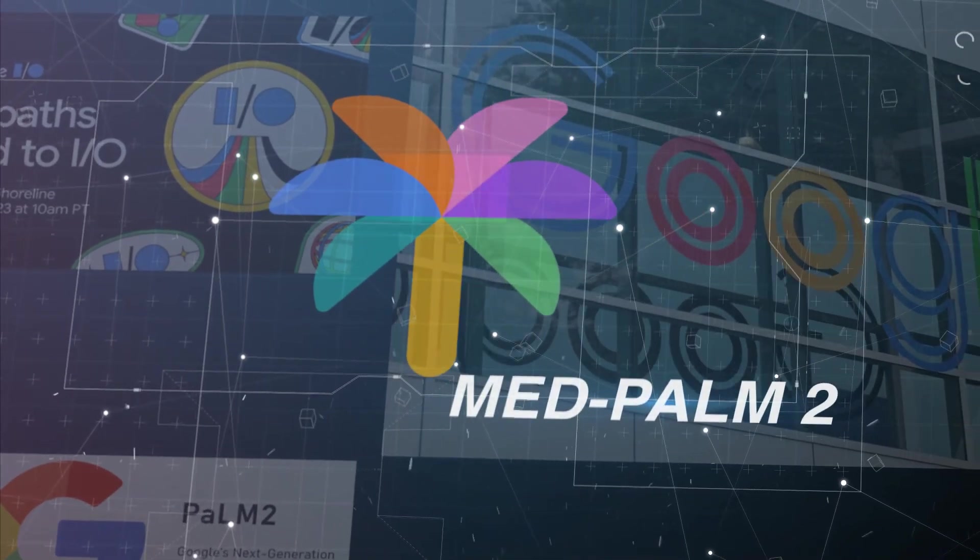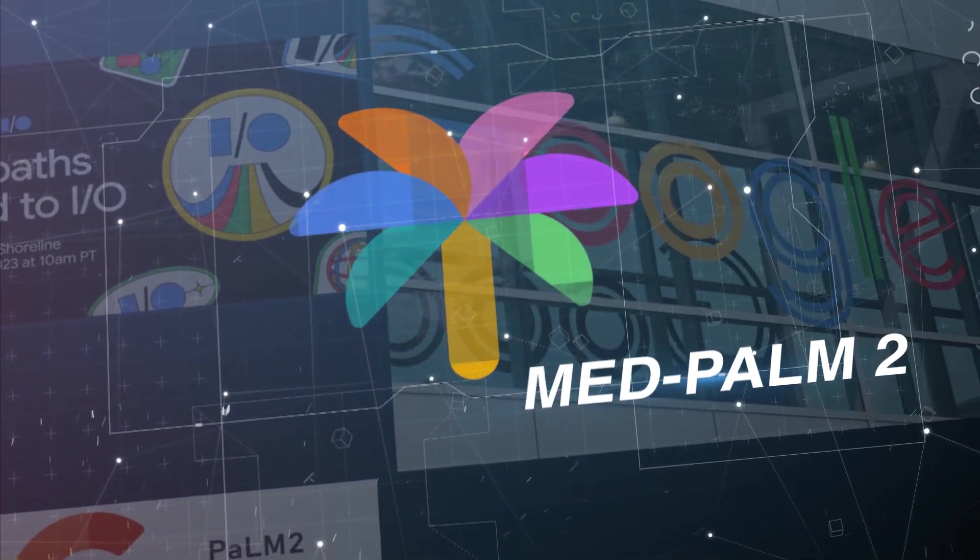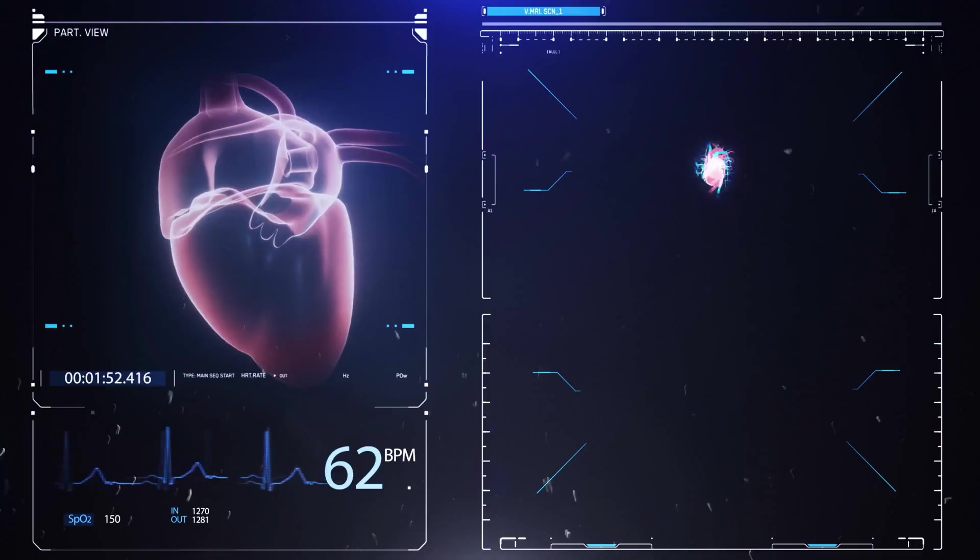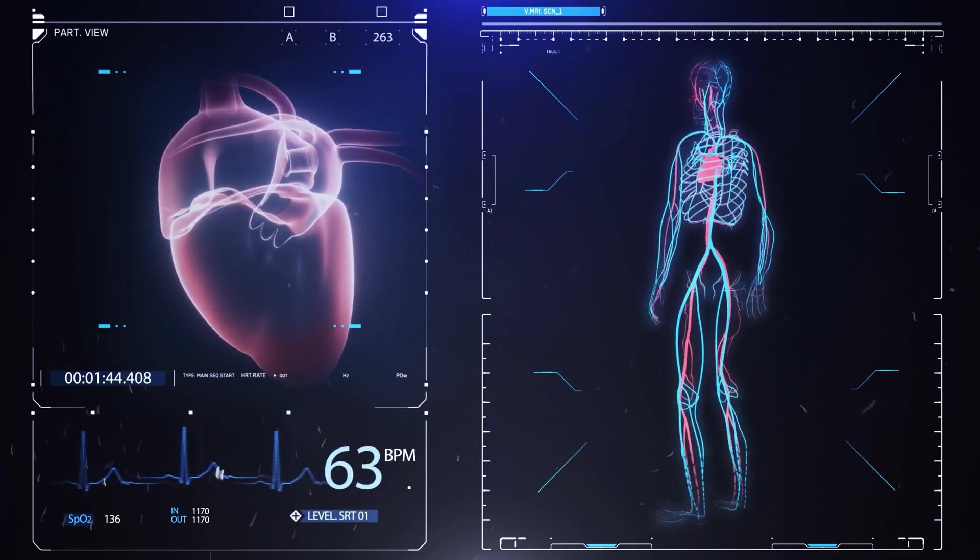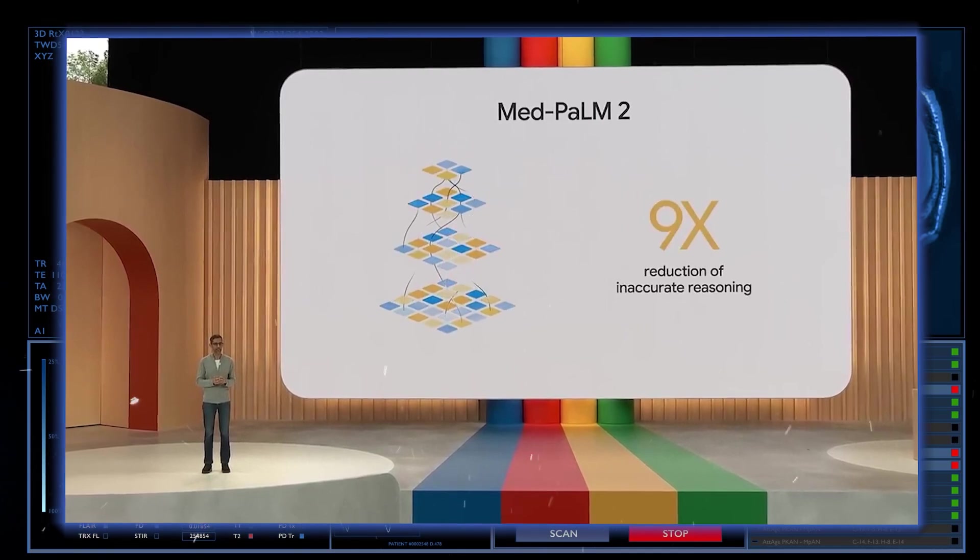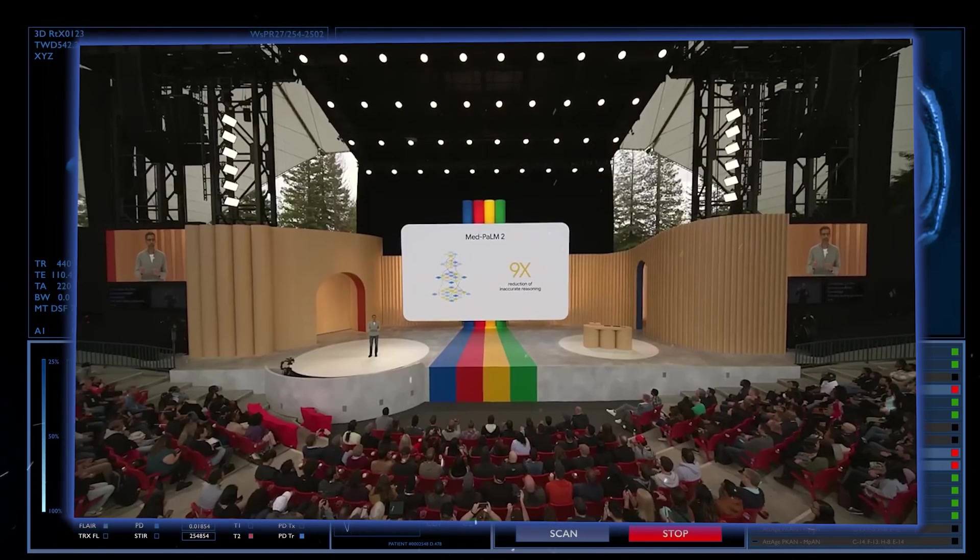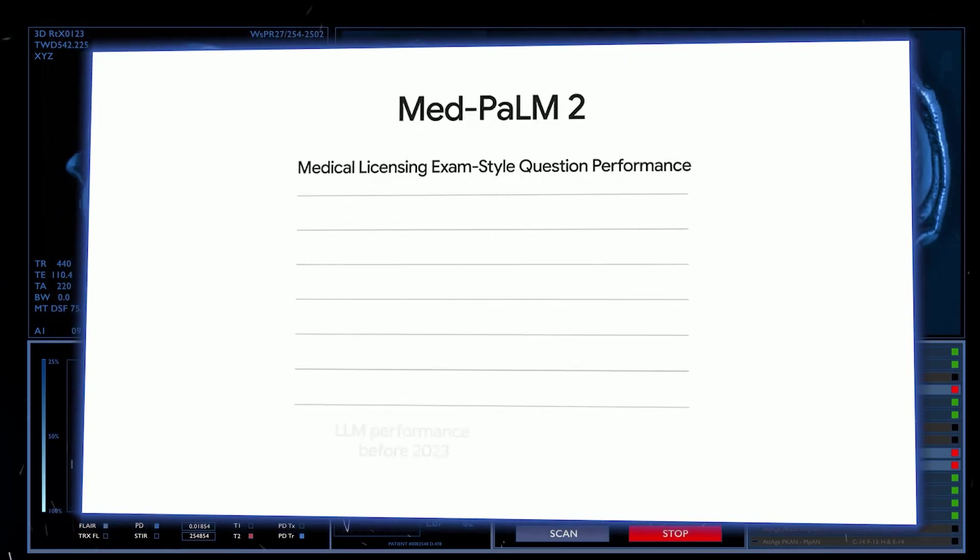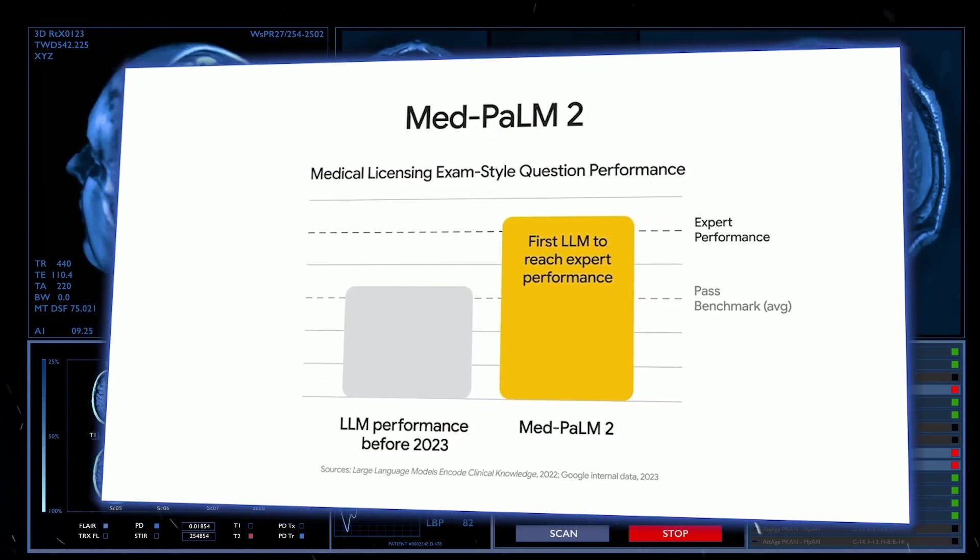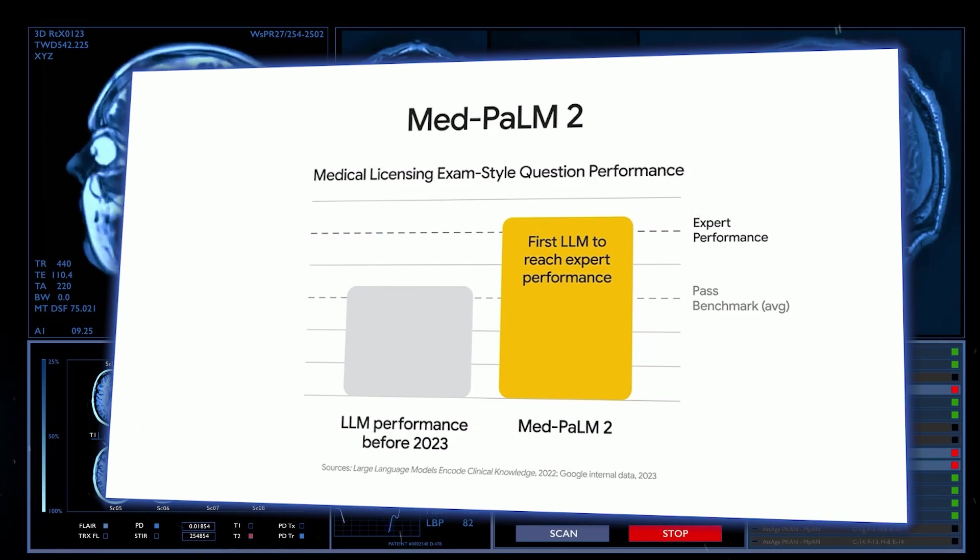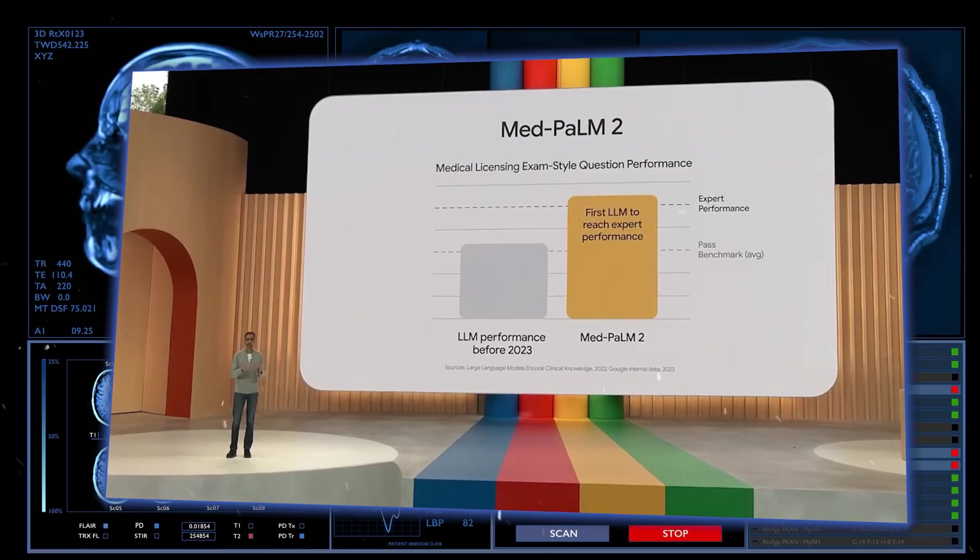Med-PaLM 2, developed by health research teams with extensive medical knowledge, demonstrates the ability to answer questions and extract valuable insights from dense medical texts. It has achieved exceptional results in terms of medical competency, distinguishing itself as the first large language model to perform at an expert level on U.S. medical licensing exam-style questions.